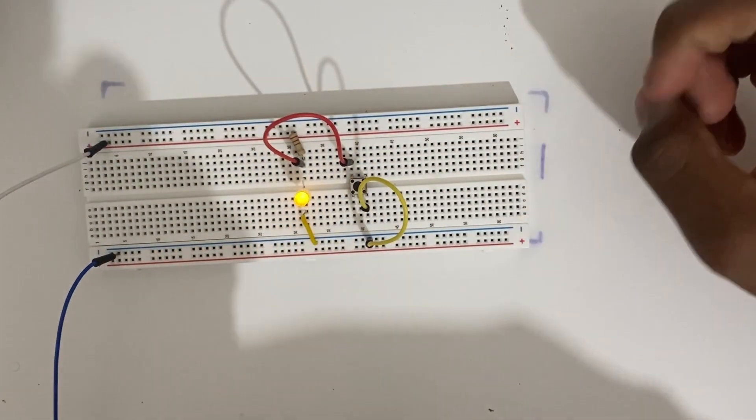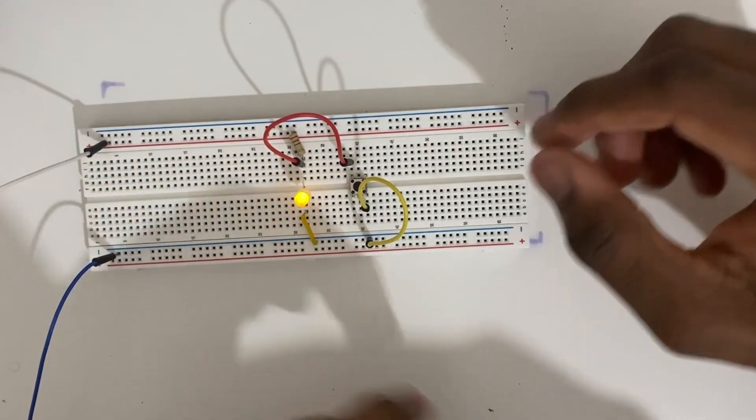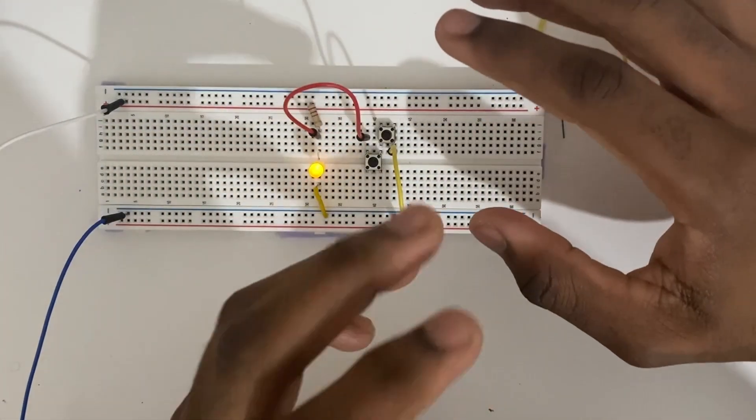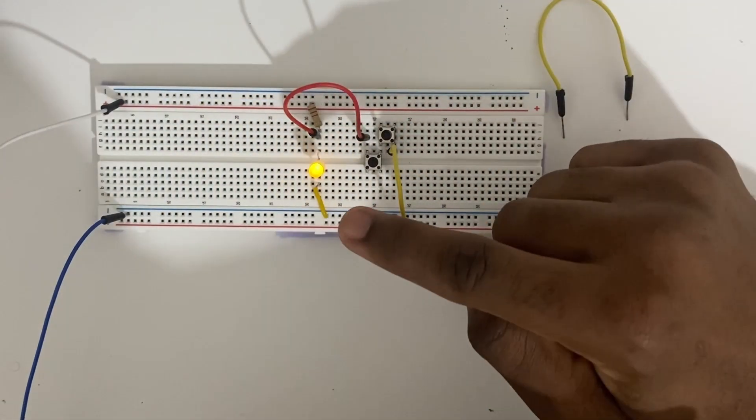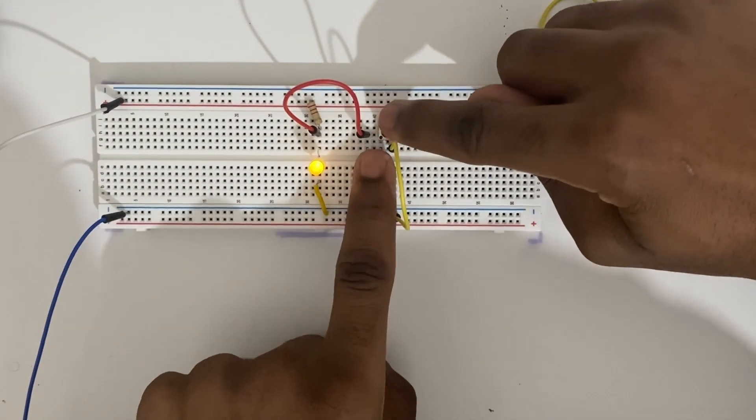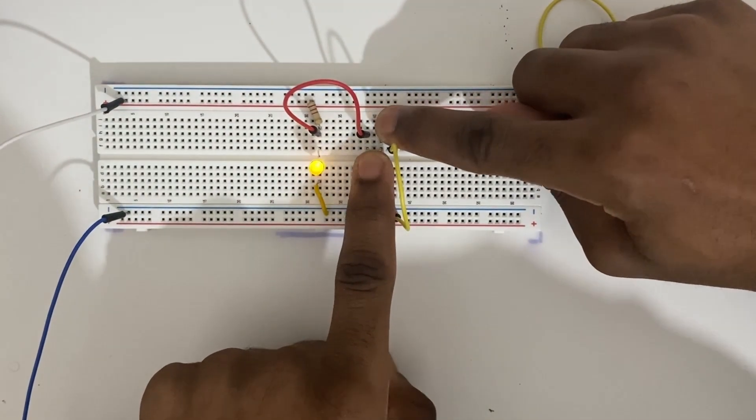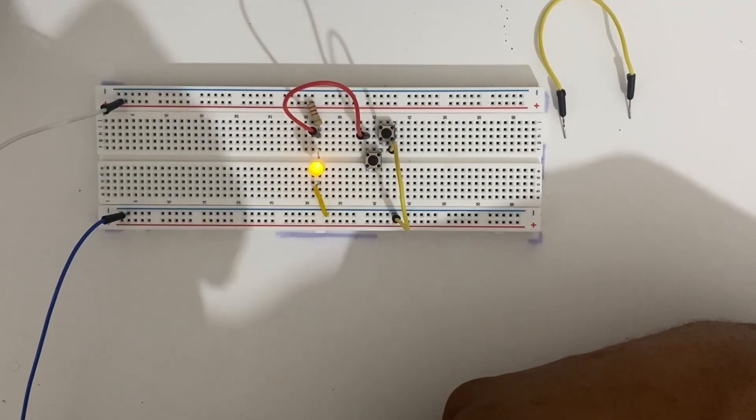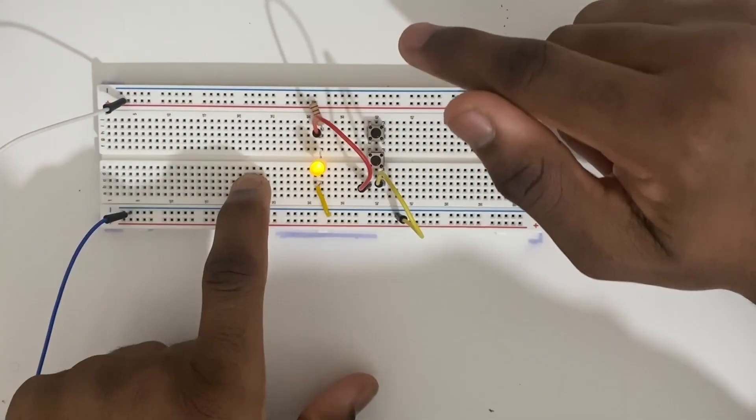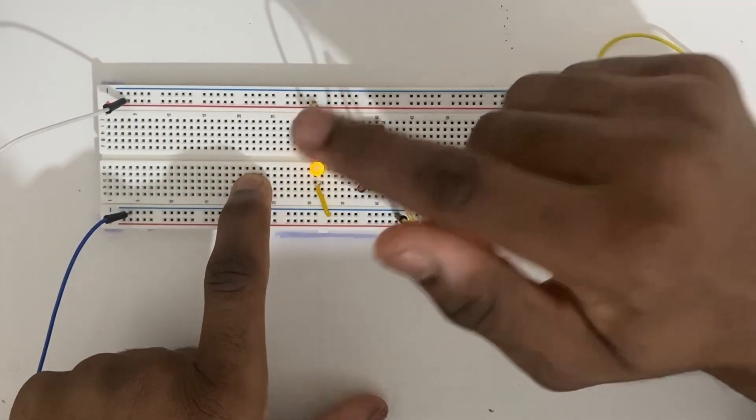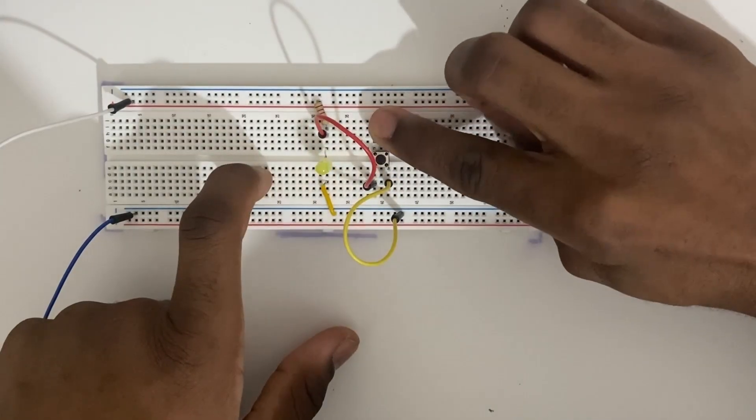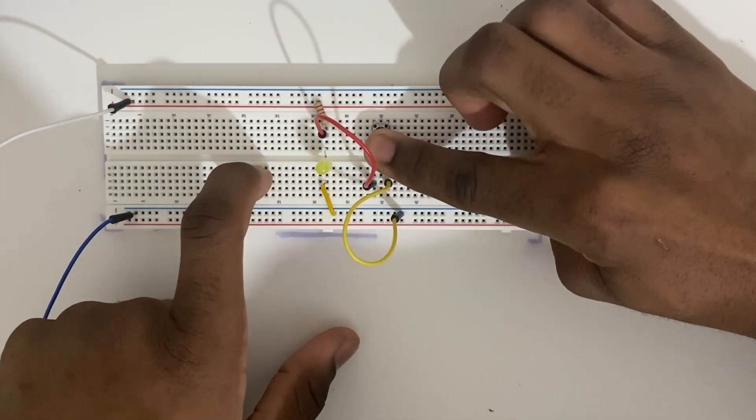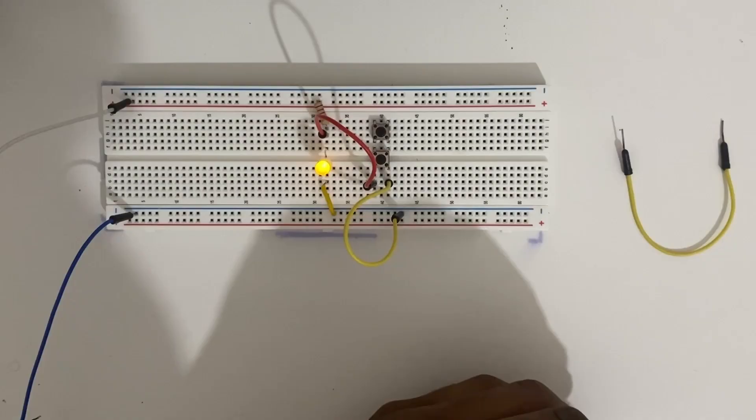Now remember the AND circuit we built before? We can still use that switch arrangement here. And last time we had to press both buttons to turn the light on. But this time we have to press both buttons to turn the light off. So it's an inverted circuit. It's the opposite of the previous circuit we built. We can do the same for the OR circuit. In the last circuit, we had to press either button to turn the LED on. This time we press either button to turn the LED off. And this is the inverted OR circuit.